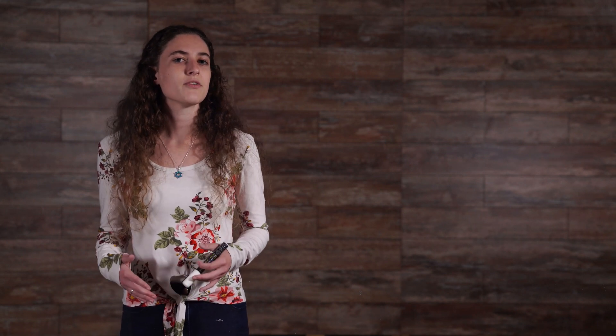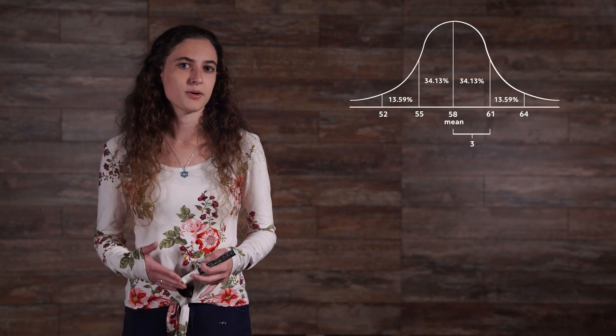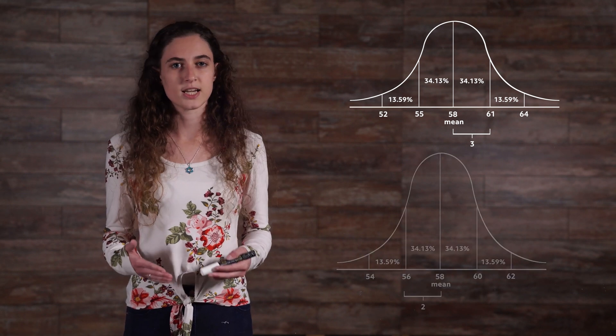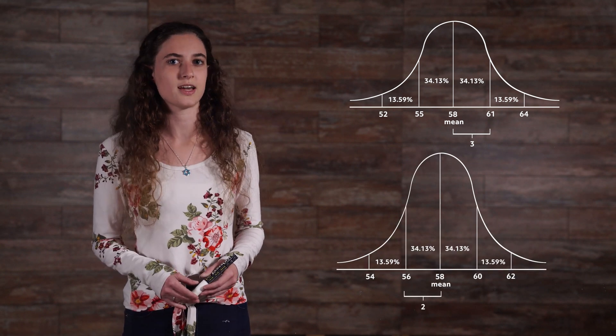That shows us what standard deviation is all about. In this case, it's the number of inches of height away from the average that will make up 34% of the population. In the first case, it was 3 inches to account for that percentage of people. In our second example, it only took 2 inches to account for that percentage.